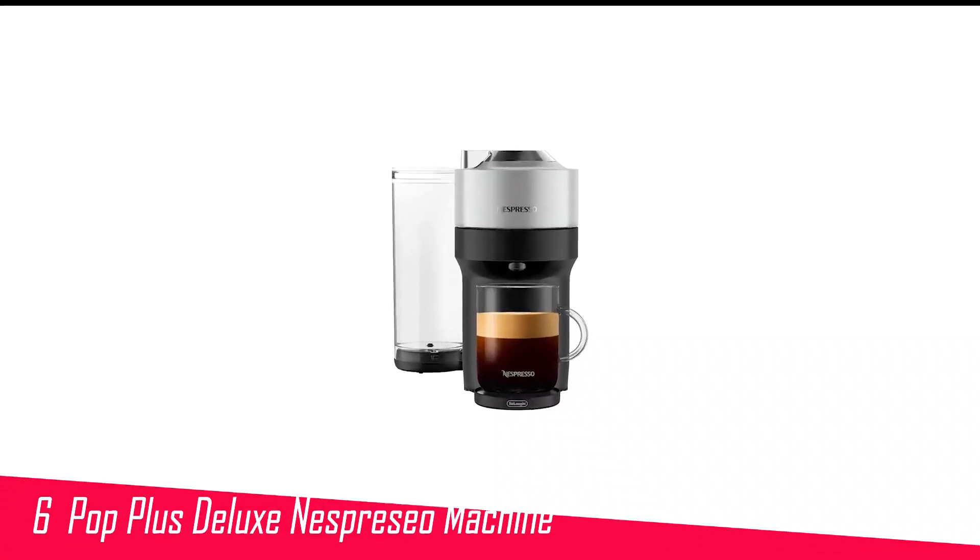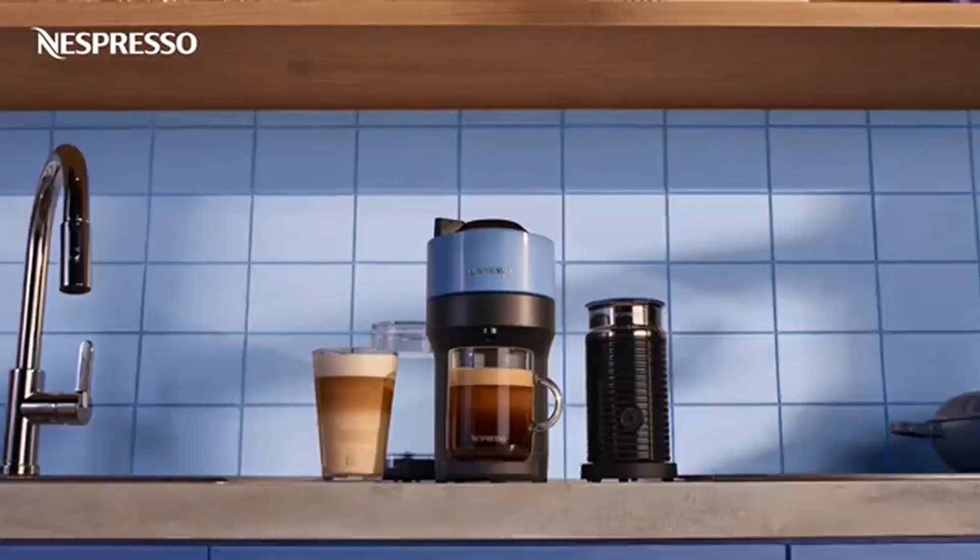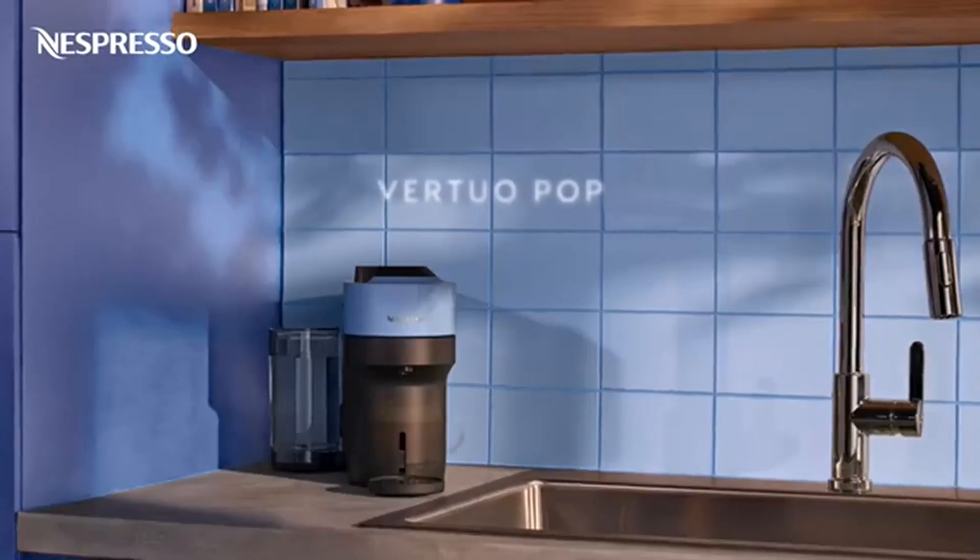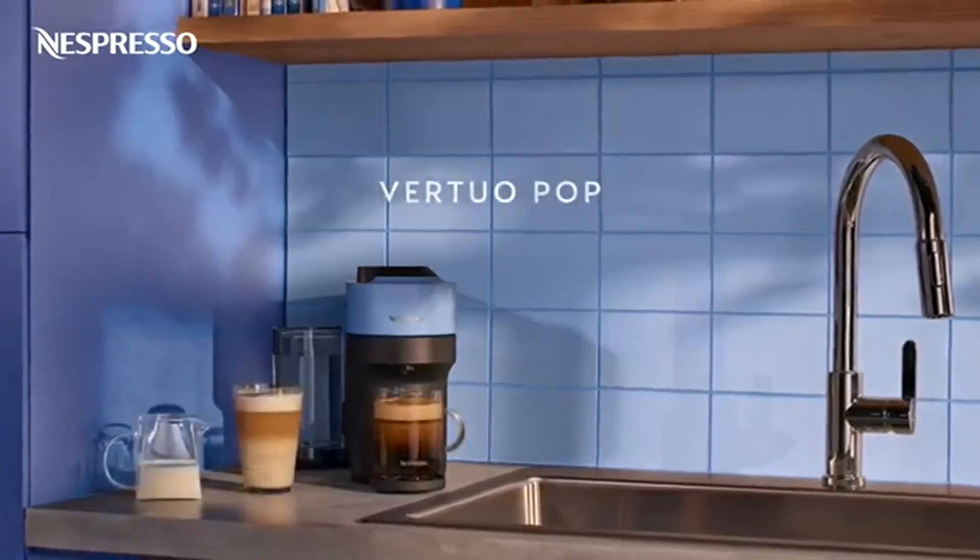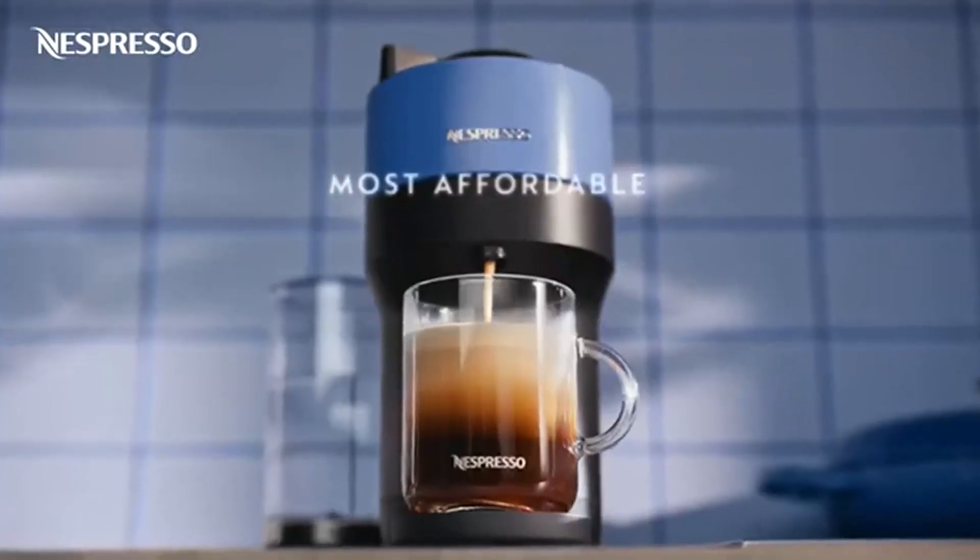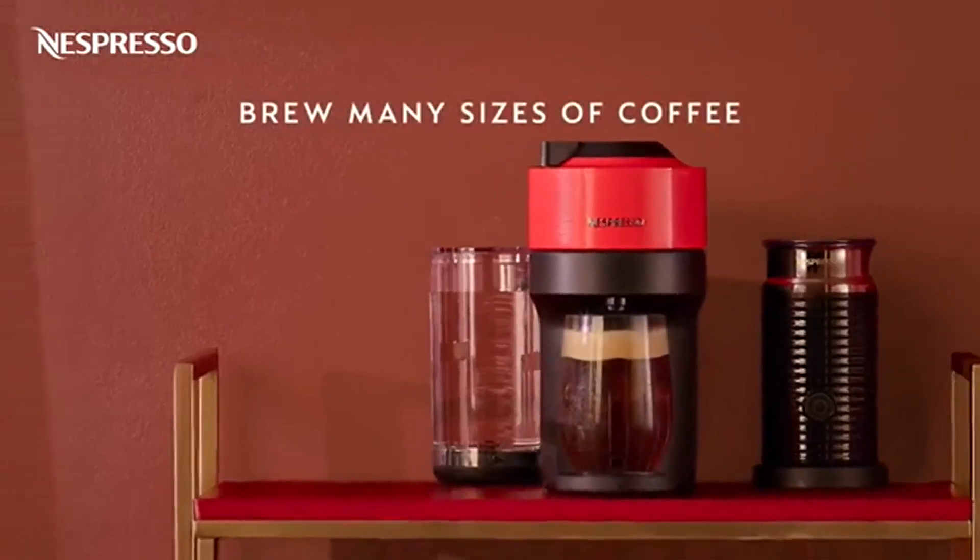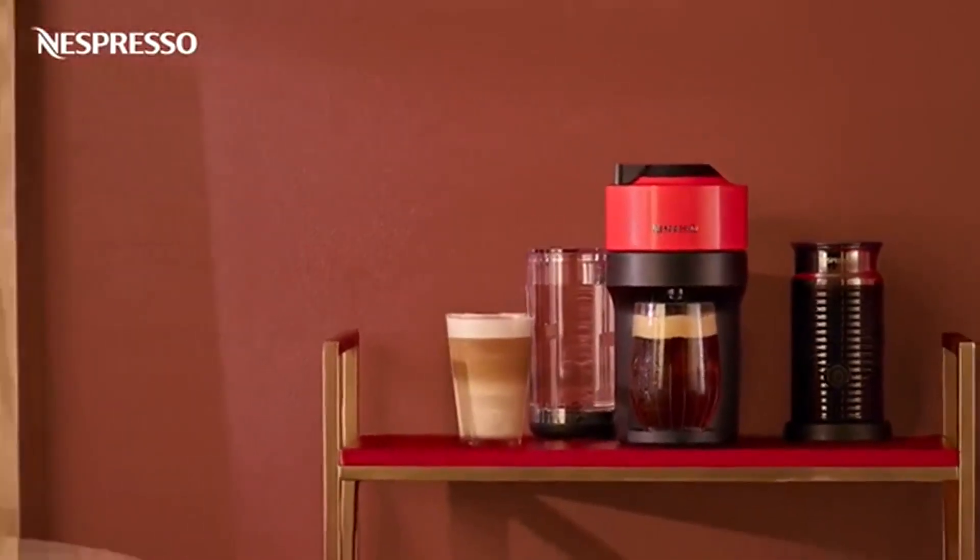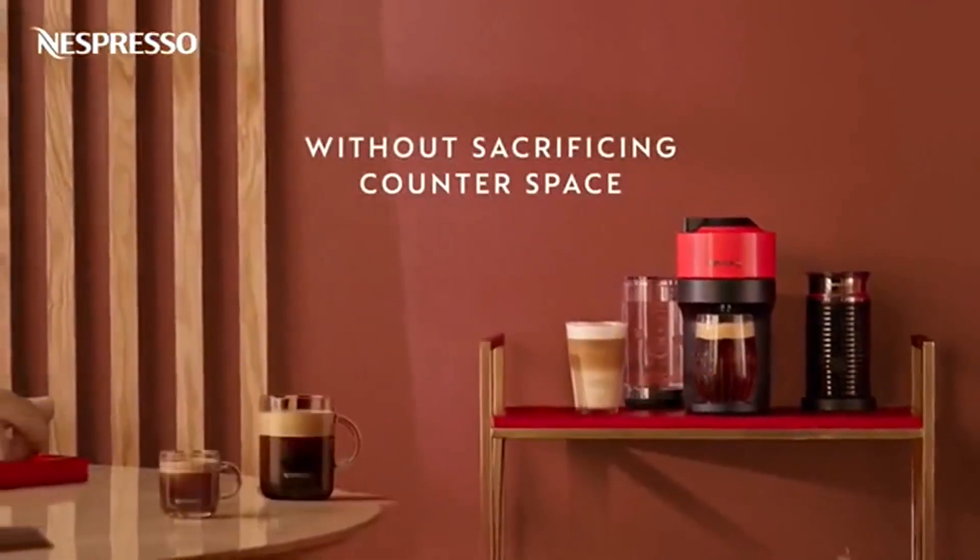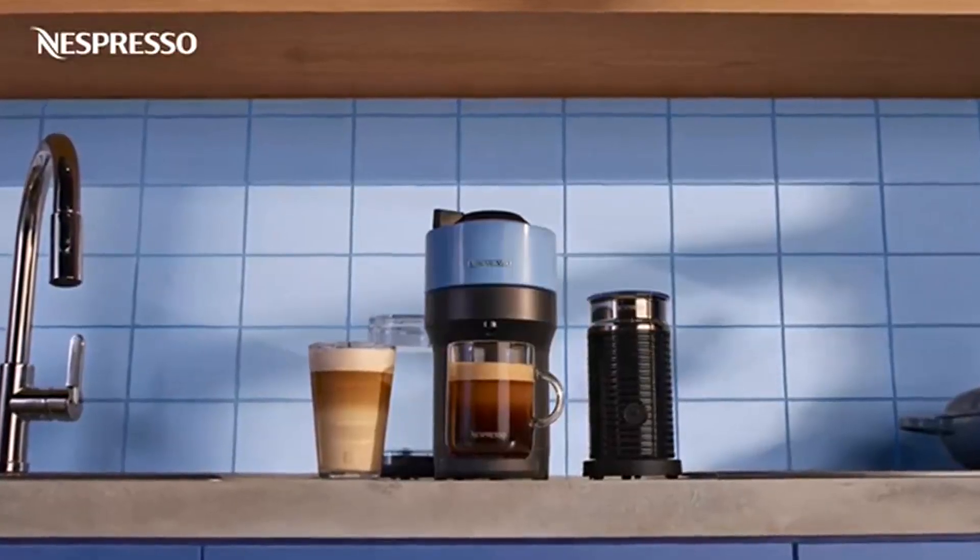Number 6 in my list is Vertuo Plus Deluxe Nespresso machine. The latest in the Vertuo line, the Vertuo Plus is a stylish coffee and espresso machine that comes in a rainbow of 7 colors and offers users the ability to brew both hot and cold beverages in 5 sizes. Choose from 5, 8, 12-ounce coffees, as well as single and double espressos brewed hot or over ice. It's functionally very similar to the Vertuo Plus, but it has a slimmer design and a slightly smaller water tank.